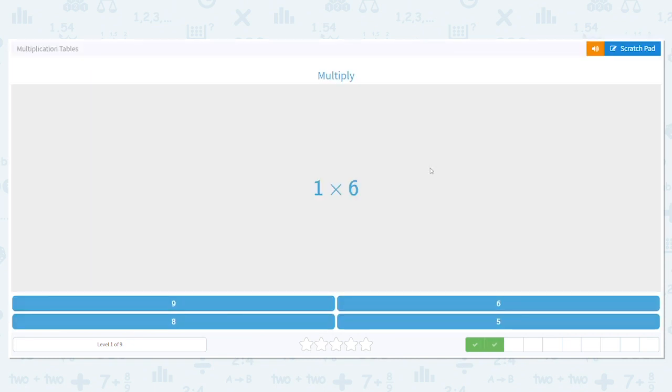How about 1 times 6? The other number that isn't 1 is your product. So 1 times 6 is, go ahead and say it. 6.